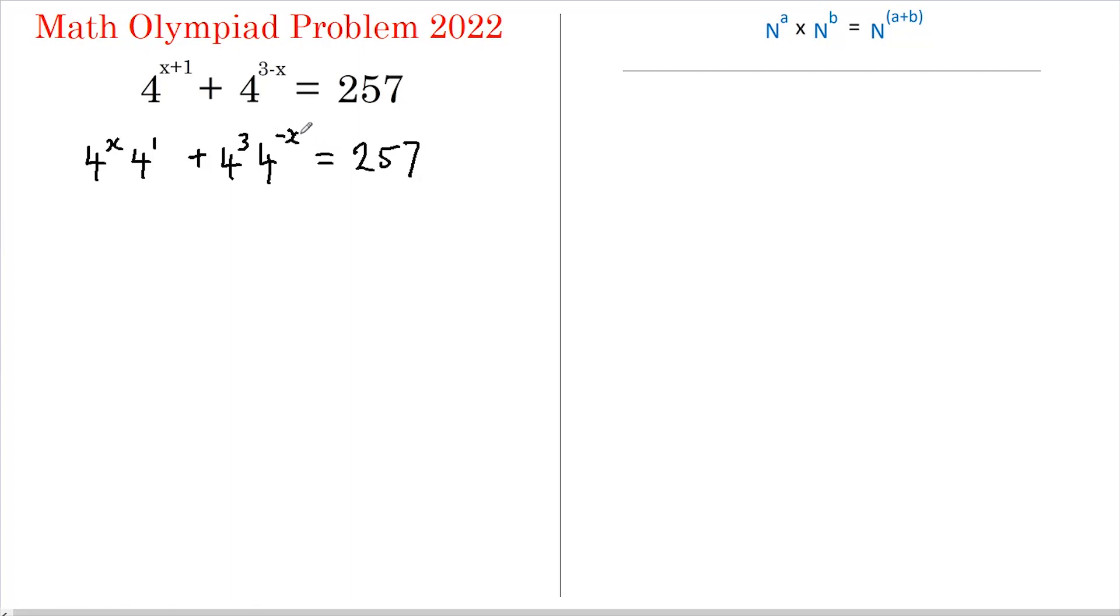Now this negative x is looking like it's a bit of a problem so I'm going to get rid of that by multiplying throughout by 4 to the x. So 4 to the x times 4 to the x is 4 to the x squared.